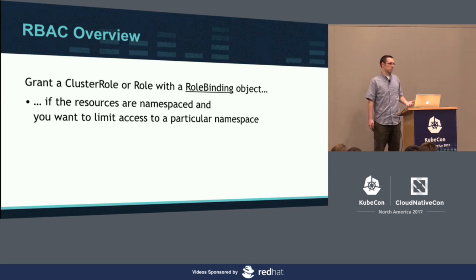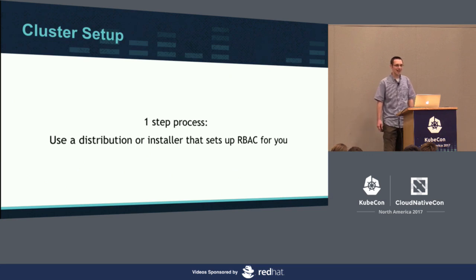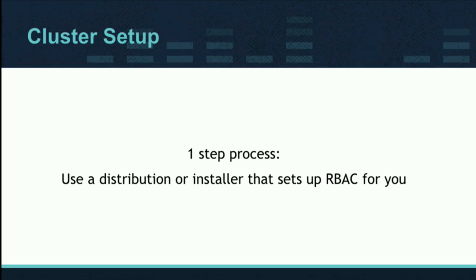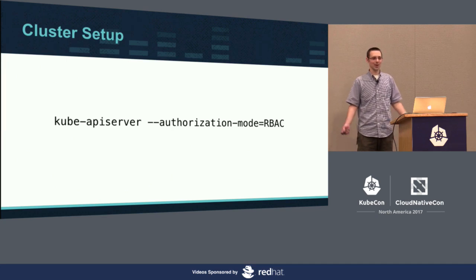Next I'm going to talk about setting up an RBAC-enabled cluster. The easy way is a one-step process: use a distribution or installer that does it for you. This is becoming more and more realistic. Most major installers have at least an option for it, and many do it by default — kubeup, kubeadm, distributions like OpenShift, GKE, Tectonic. If you have your own deployment mechanism, or want to know what's happening under the covers, the first thing is to tell the API server to start with RBAC authorization, and congratulations — you're running an RBAC-enabled cluster.